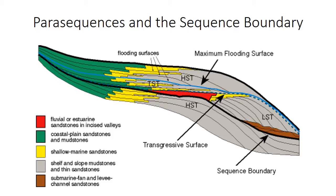So far in this class, you've learned about systems tracks and the sequence stratigraphic surfaces, so you have all the information that you need to apply the concepts of sequence stratigraphy to actual outcrops in stratigraphic sections. The purpose of this video is to cover a few terms, most notably the parasequence and the sequence boundary, that you may encounter in other discussions of sequence stratigraphy in the future.